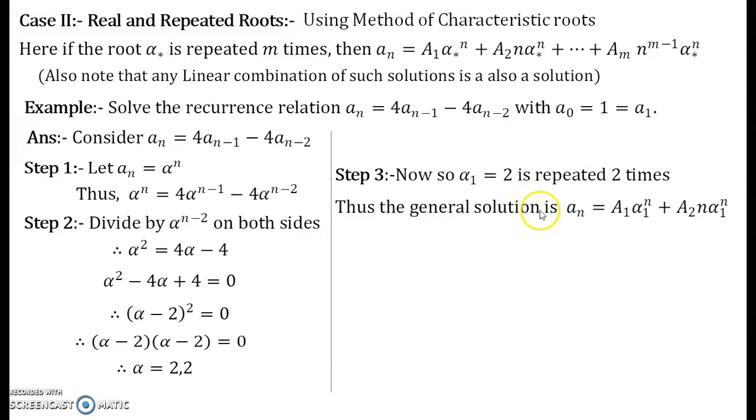Since α₁ is repeated 2 times you have 2 coefficients associated to it coming into the general solution. So try to understand that thing very carefully and moreover you have 2 initial conditions. So you will need 2 A₁ and A₂ constants to be determined.